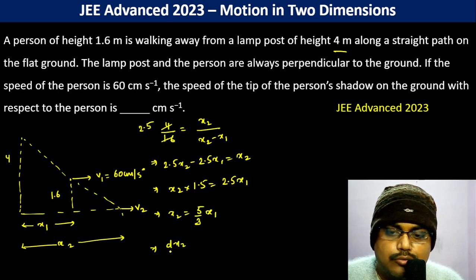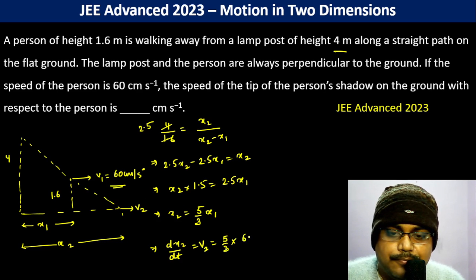Differentiate on both sides, so dx2/dt which is actually v2 becomes 5 by 3 into dx1/dt which is 60. This comes to 100 centimeters per second.